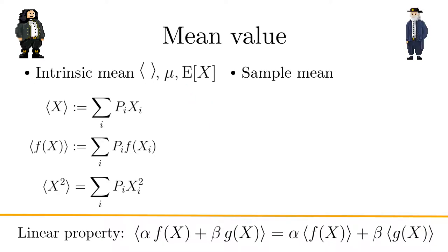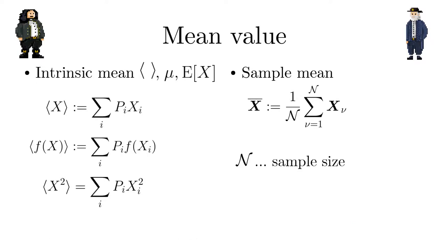From the frequentist perspective, based on a sample of size n, the sample mean is formed by the arithmetic mean of the sample values. Note that the sample mean varies depending on the sample and describes a random variable. The sample mean will be denoted by an overline.